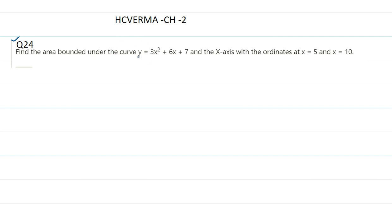Find the area bounded under the curve. So this is the equation or this is the curve given to us: y equals 3x squared plus 6x plus 7, and the x-axis with the coordinates x equals 5 and x equals 10. So basically,